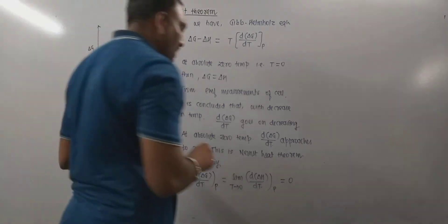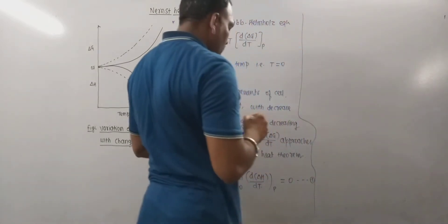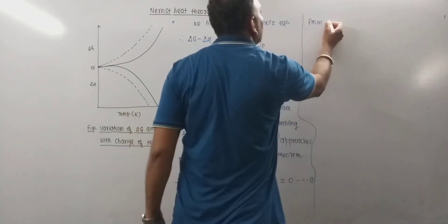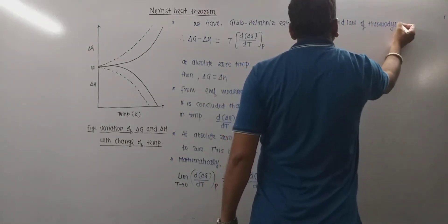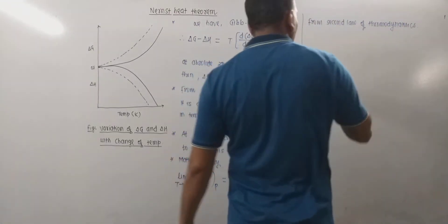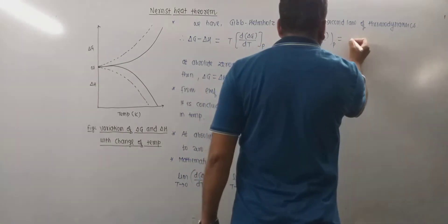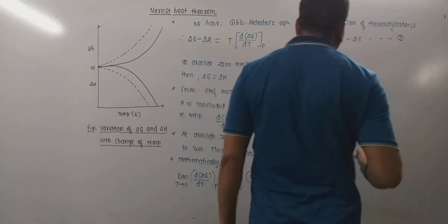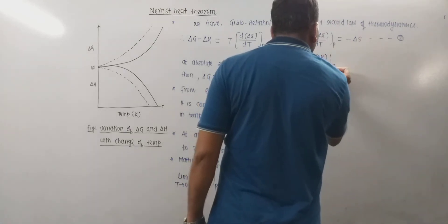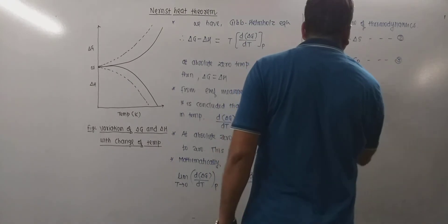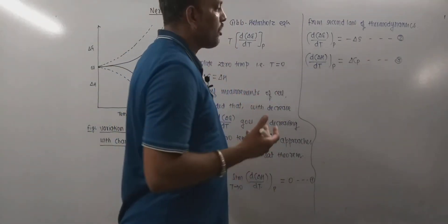From the second law of thermodynamics, we know that d(ΔG)/dT at constant pressure equals minus ΔS — this is equation two. Also, d(ΔH)/dT at constant pressure equals ΔCp — this is equation three, which is nothing but Kirchhoff's equation, indicating the effect of temperature on heat of reaction.